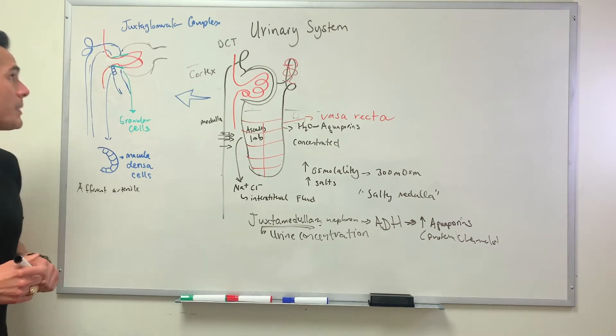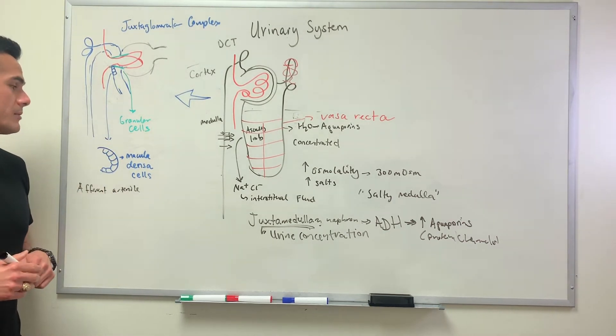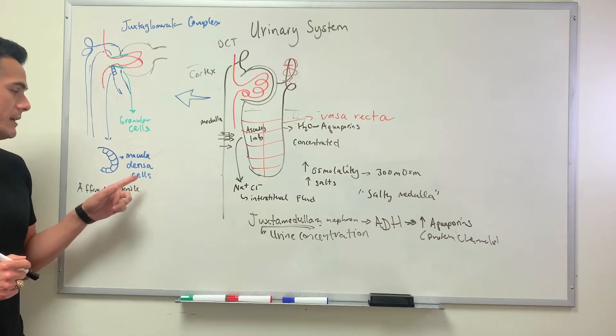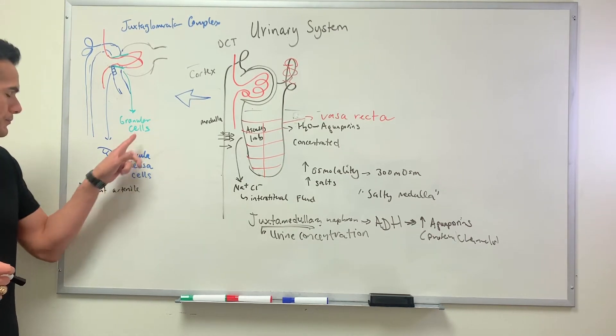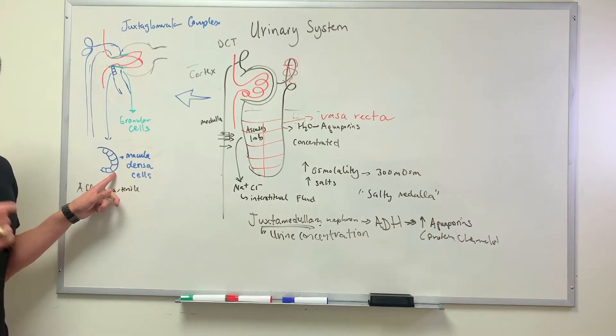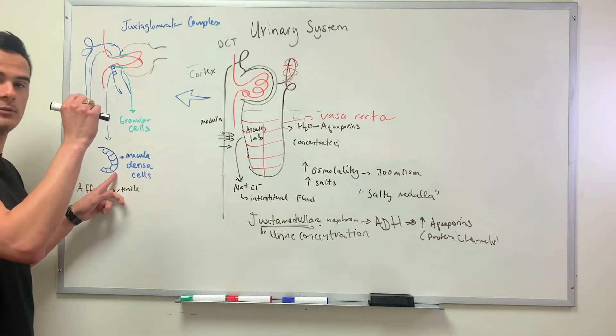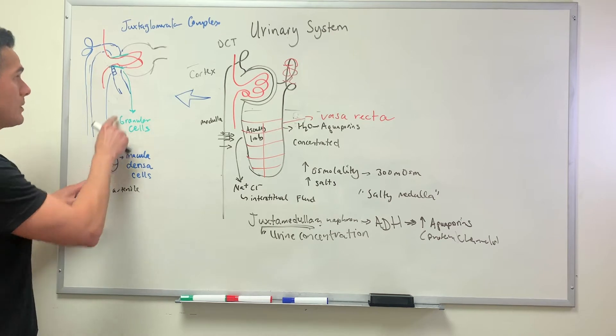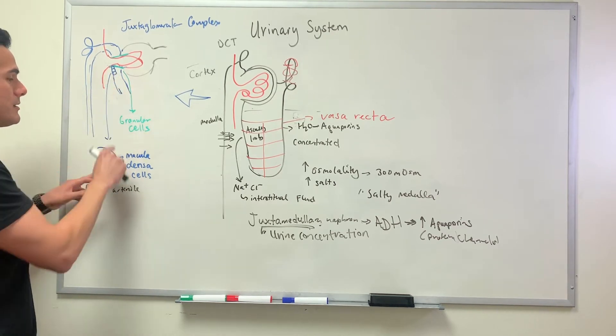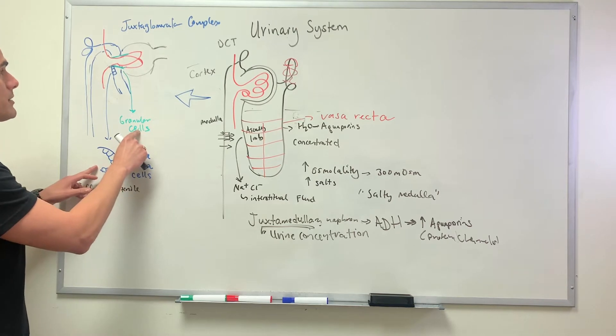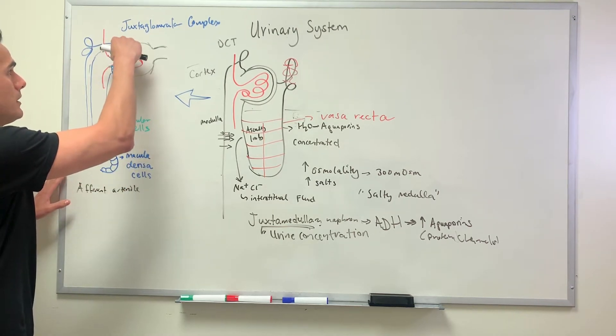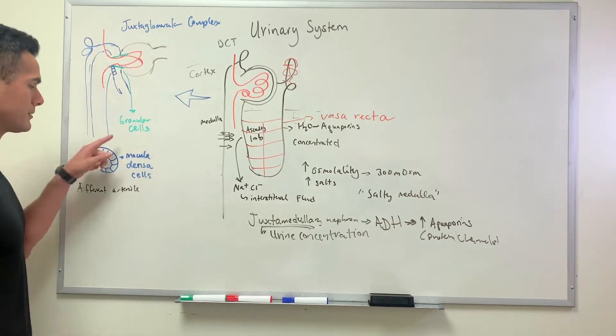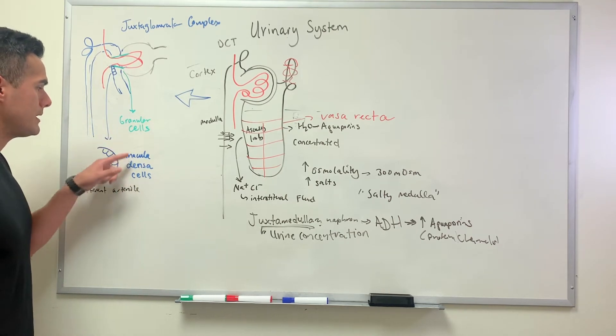Here within the juxtaglomerular complex we have a couple different main players: the macular densa cells and granular cells. The macular densa cells are found within the ascending limb of the loop of Henle. The granular cells are like the smooth muscle layer that's found on the outside of the afferent and efferent arterioles. The macular densa and the granular cells communicate with each other by the release and the inhibition of ATP.